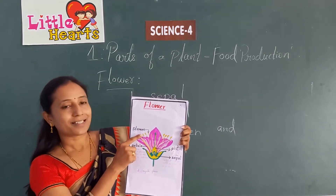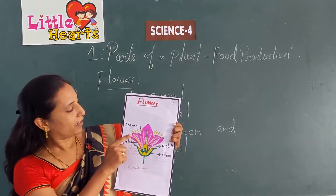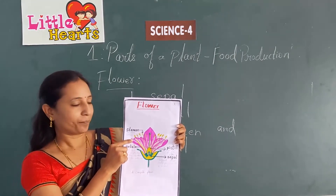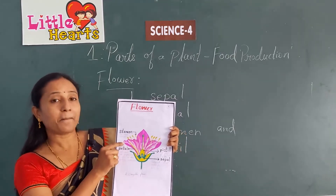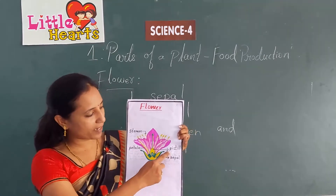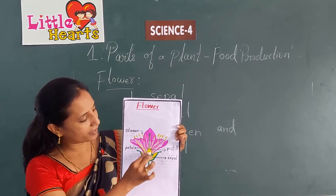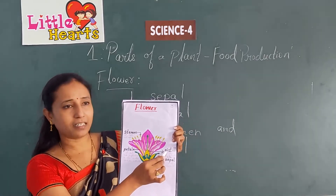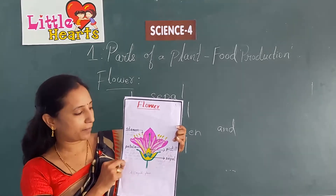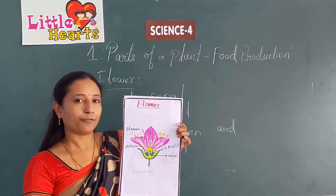Next, look at these yellow color lines — these are the stamen. The stamen is the third whorl of the flower and these are the male reproductive parts. The last part is the pistil, the center part of the flower. It is the fourth whorl and is the female reproductive part of the flower.